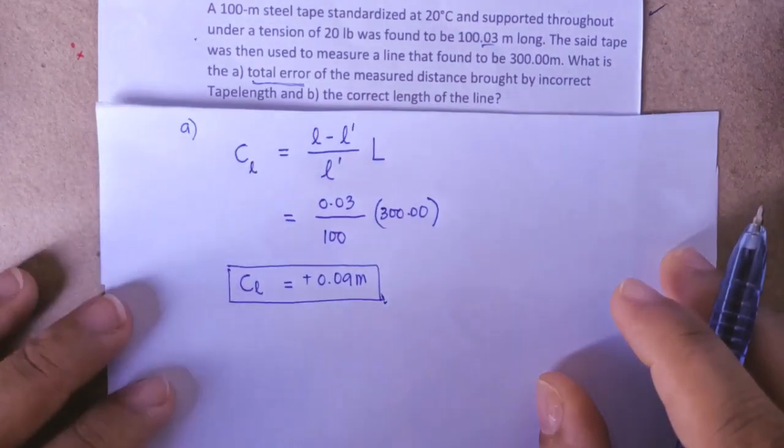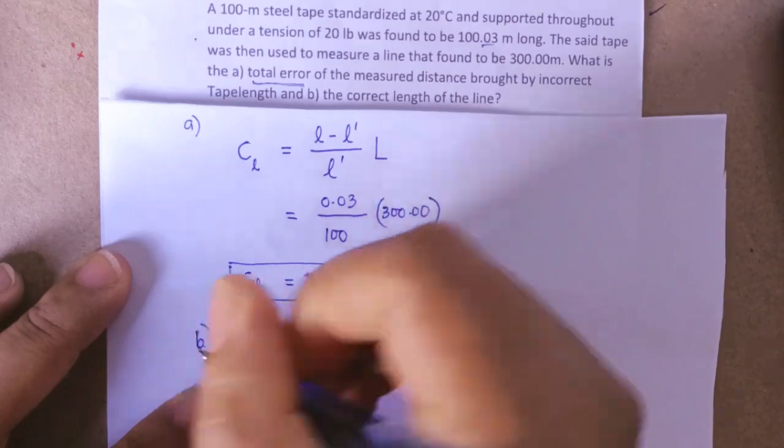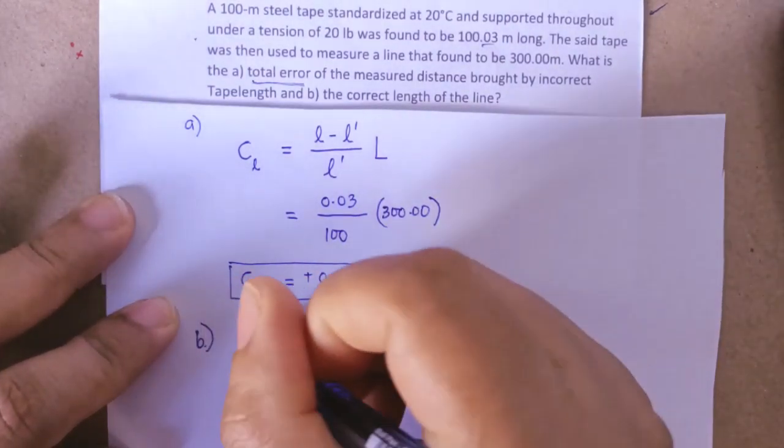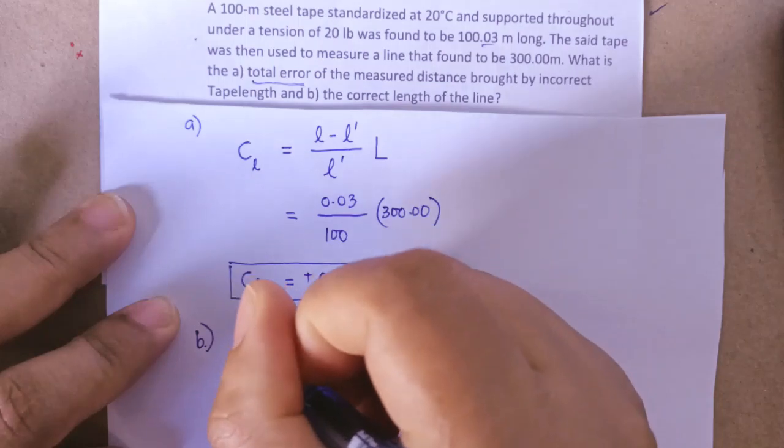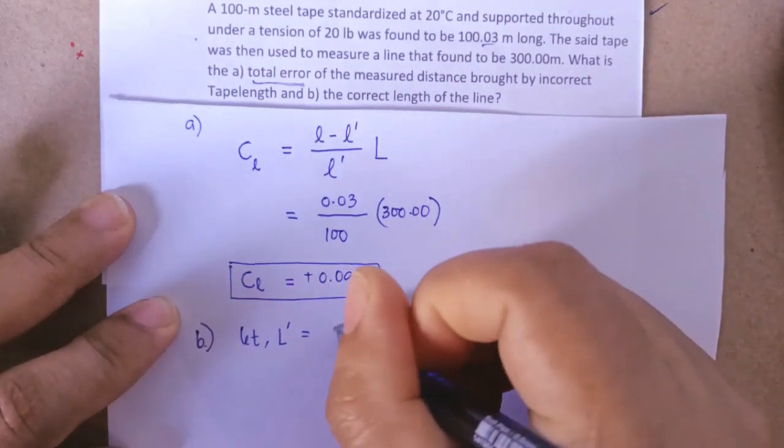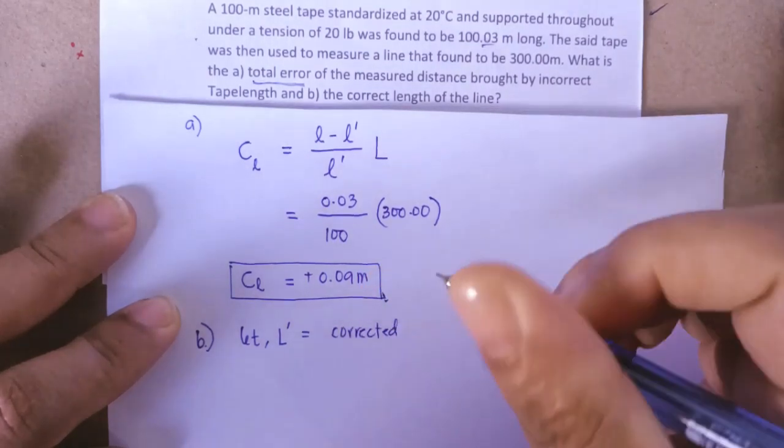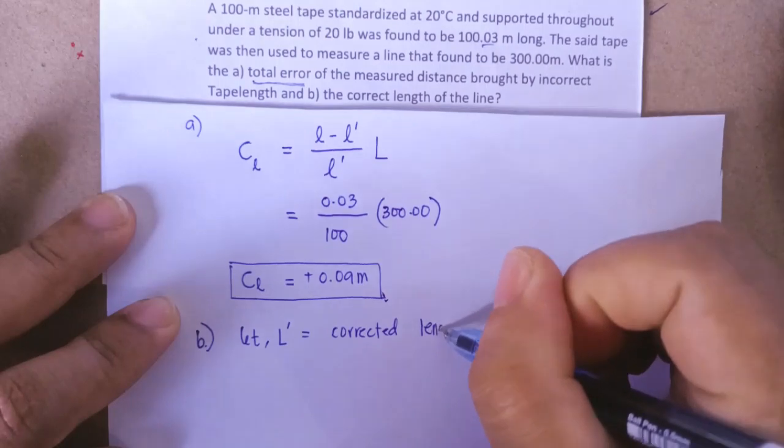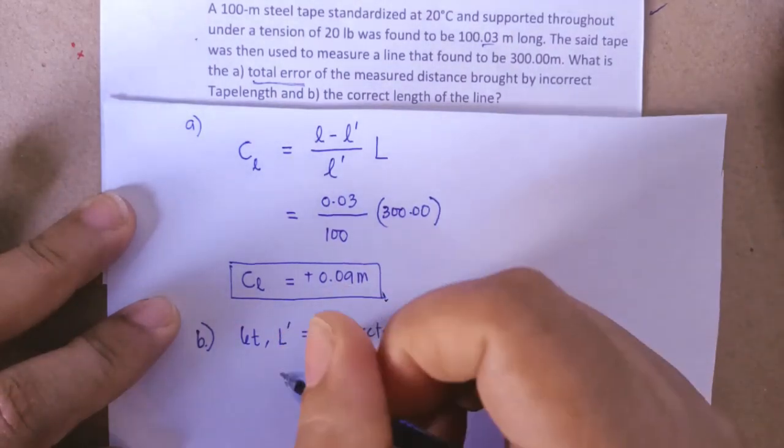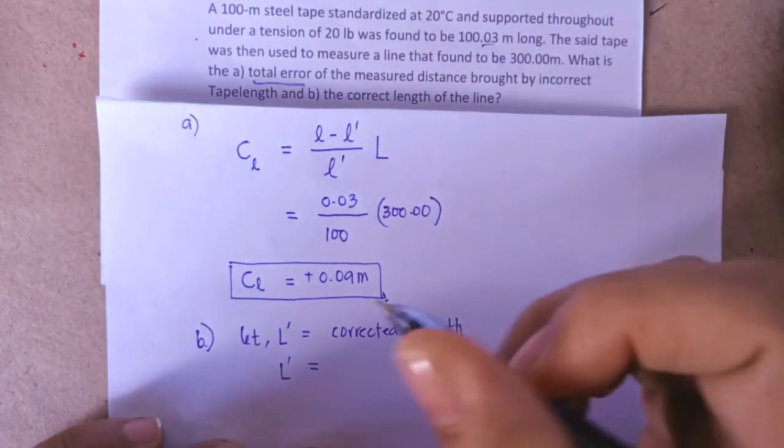Next problem is the corrected length. So of course we have to get the corrected length. We will call that one as let l prime be the corrected length, and we can get the corrected length to be the measured length.